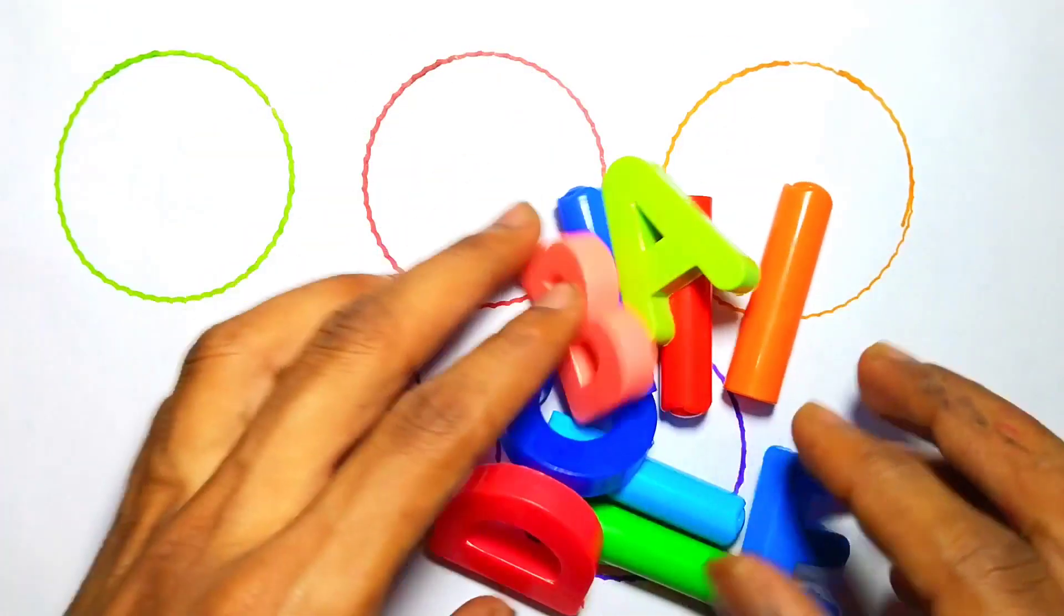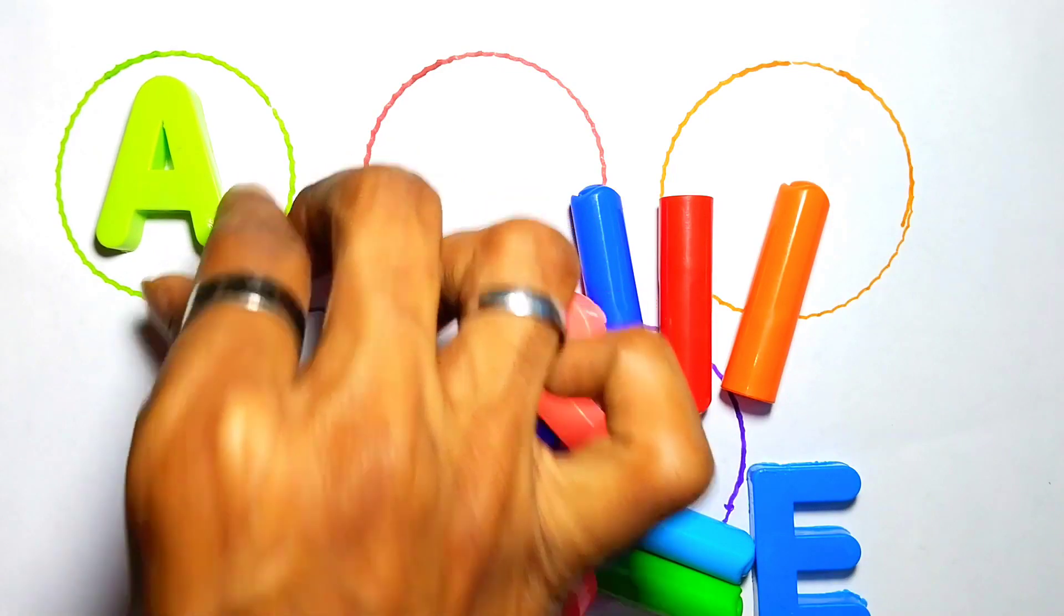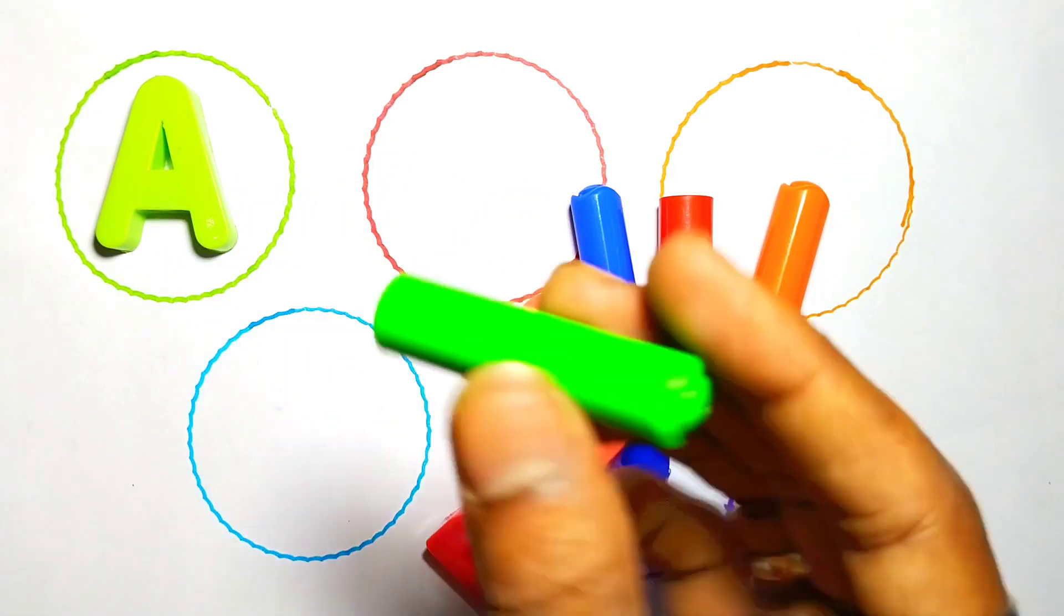Today we are learning alphabets A. A for apple, light green color.